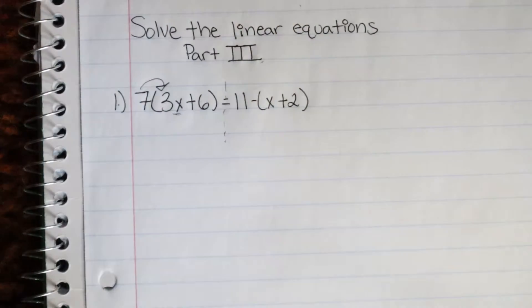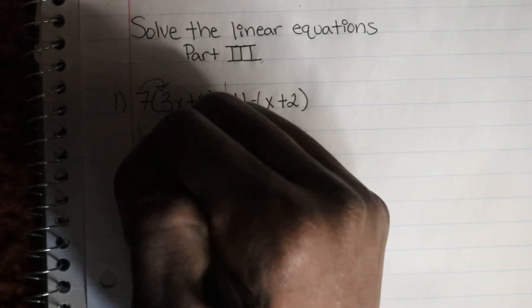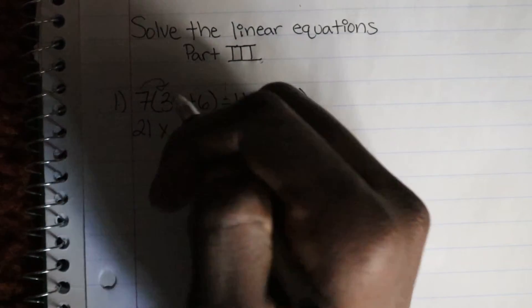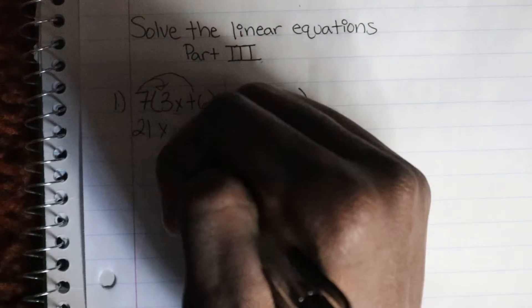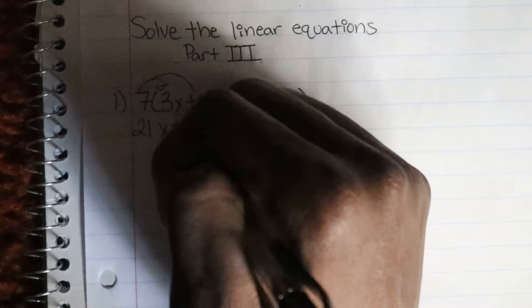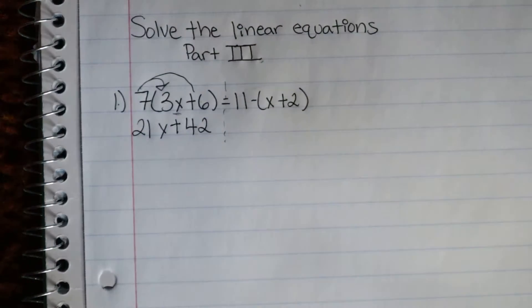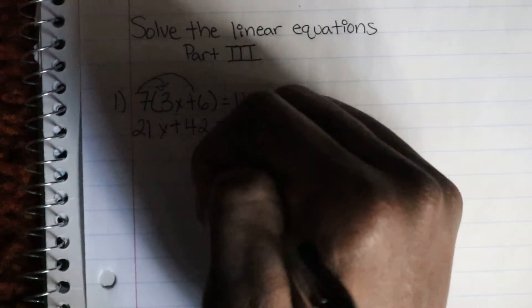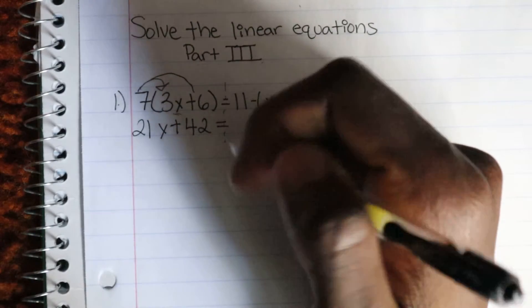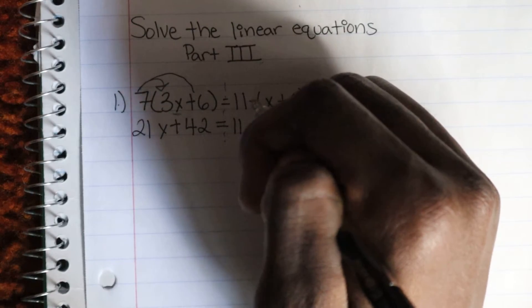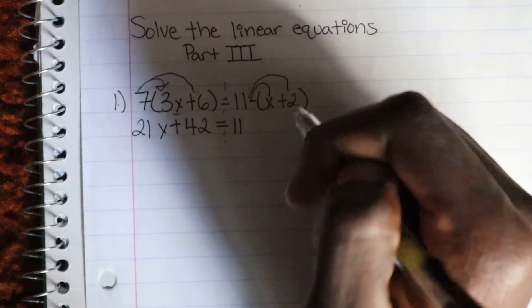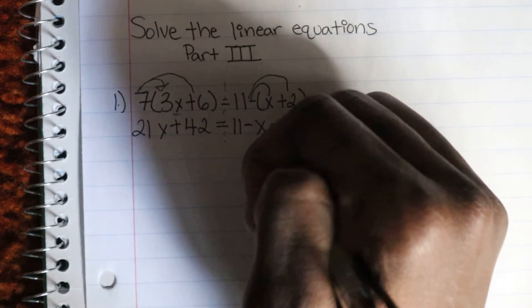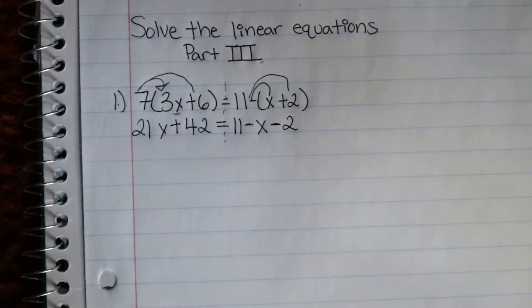So let's take this 7 and distribute it into this parenthesis, and take this negative and distribute it into this parenthesis as well. We're just trying to make this clean. So 7 times 3x gives you 21x, and 7 times 6 gives you positive 42, on one side of the wall. Then you put the equal sign, the 11 gets dropped down, then you distribute the negative — you get negative x, then negative 2.